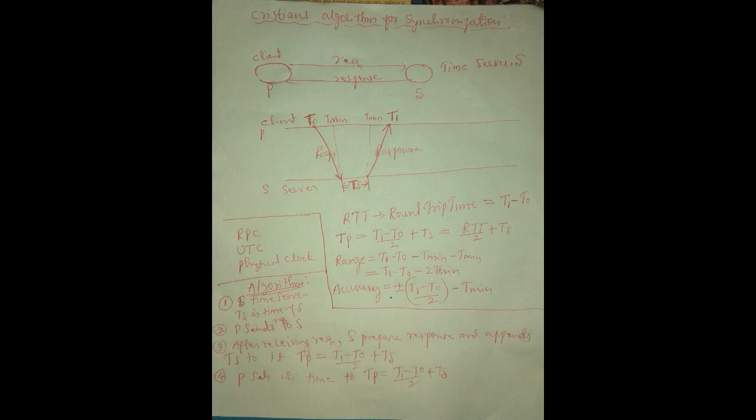That time is sent back to the client. So tp = (t1 - t0) / 2 + ts. In the fourth step, P, the client, sets its clock to tp, which equals (t1 - t0) / 2 + ts.